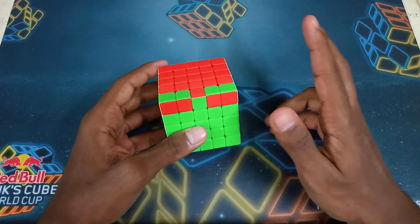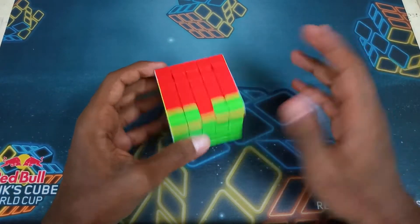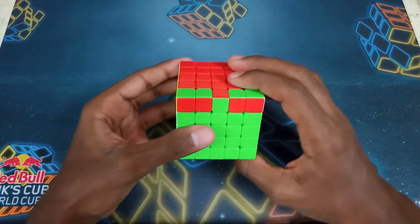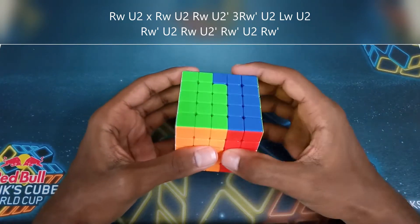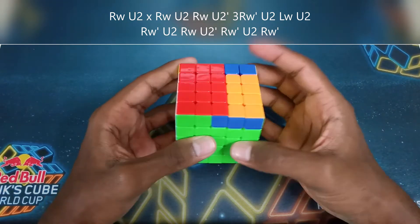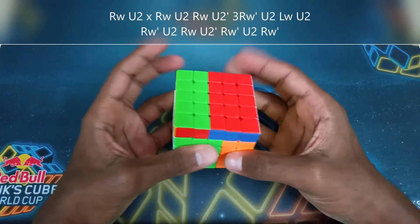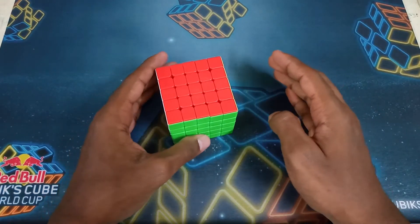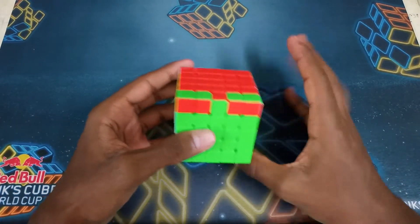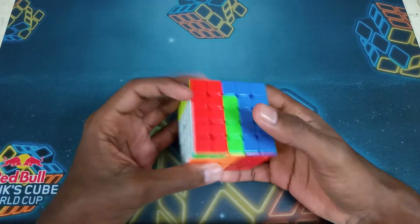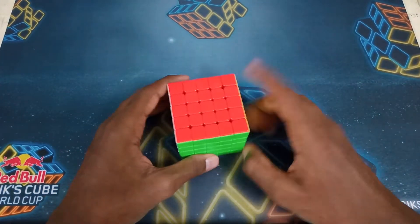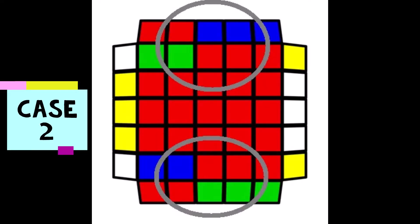Now moving on to the parity cases — there are eight in total. The first parity case is literally just parity: you have one edge left and it's flipped. The algorithm from this angle is: R U2 x R U2 R U2' wide R' U2 L U2 R' U2 R U2' R' U2 R'. It's quite long but once it's in your muscle memory it's very simple.